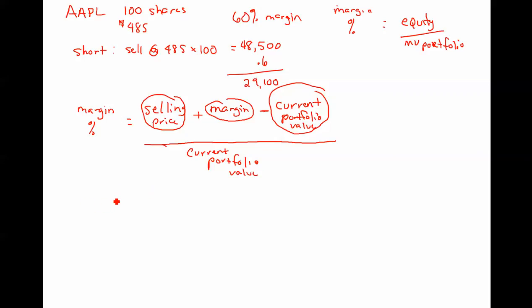So to figure out the margin percentage, when we just shorted Apple at 485 and the price hasn't yet changed, the 48,500 is our selling price. Our margin that we added was 29,100. And the cash amount that we added when we sold and we had to put up margin. And then subtract the current portfolio value, but the price of Apple hasn't changed, so it's just 48,500. And then the divisor is the current portfolio value of 48,500. So these two will cancel, and I'm left with 29,100 divided by 48,500, which is 60%.